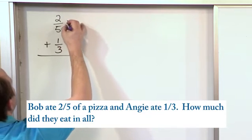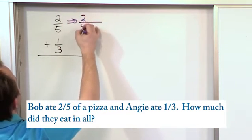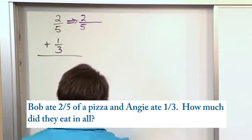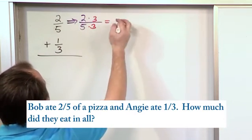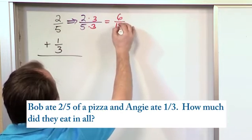So over here we'll have two-fifths and we're going to multiply this by three over three because that will give me fifteen on the bottom. In fact it will be six-fifteenths.